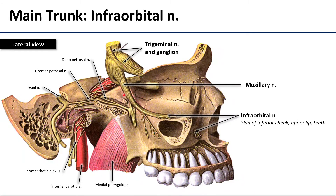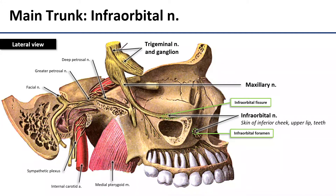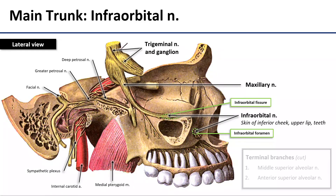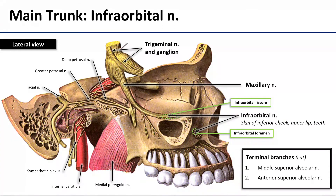The bulk of the main trunk of the maxillary nerve then continues on into the orbit as the infraorbital nerve. It travels through the inferior orbital fissure into the floor of the orbit and then back out onto the face, where it gives off tiny nasal, palpebral, and labial branches that provide sensory innervation from the skin. Prior to emerging onto the face, it gives off two additional branches going to the remaining maxillary teeth: the middle superior alveolar nerve, which will innervate the premolars, and the anterior superior alveolar nerve, which will innervate the canines and incisors. Both go through the maxilla into the alveolar process and also participate in that superior dental plexus.